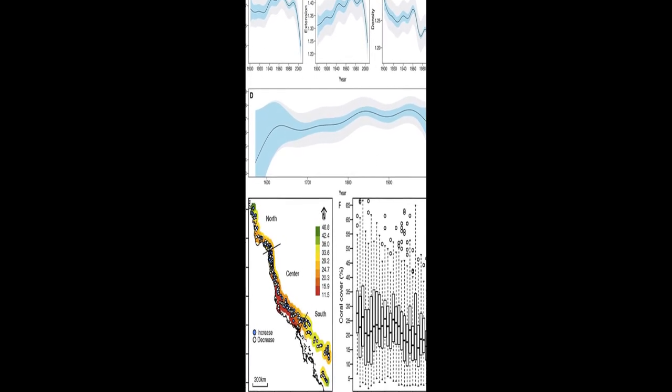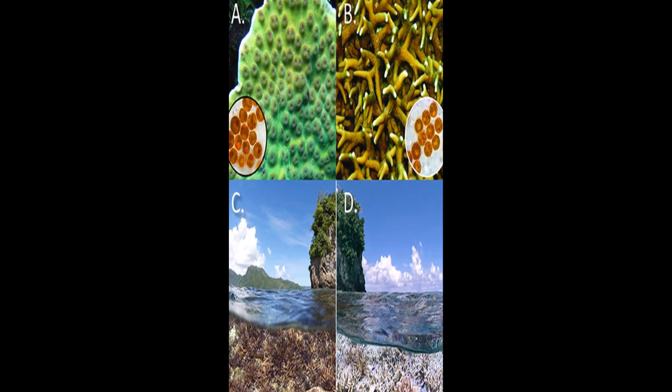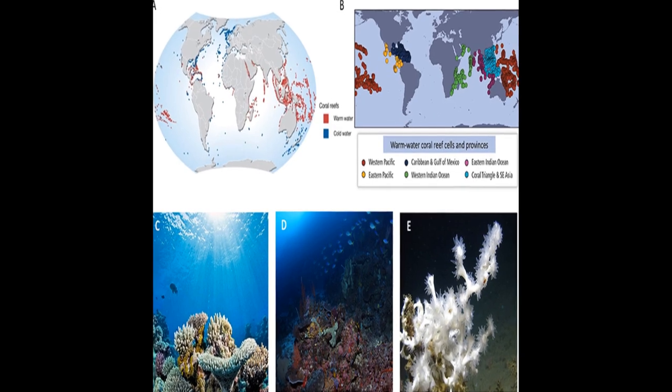Evidence that coral reefs can adapt at sufficient rates to keep up with these changes is minimal, and observations of tropical species appearing at high latitudes do not necessarily mean entire coral reef ecosystems are shifting.